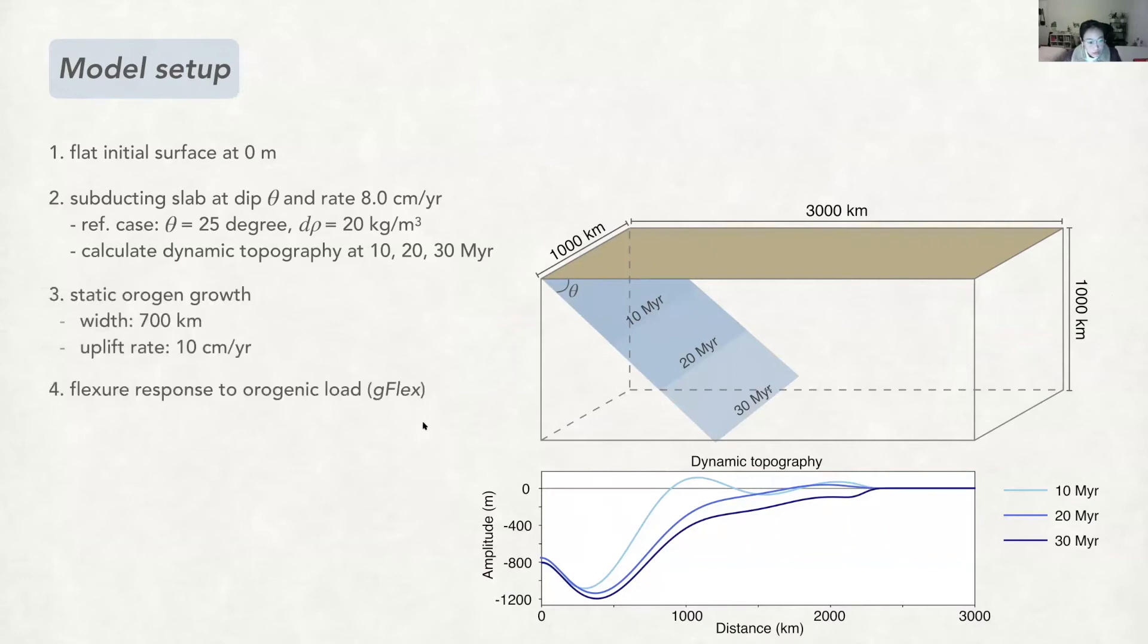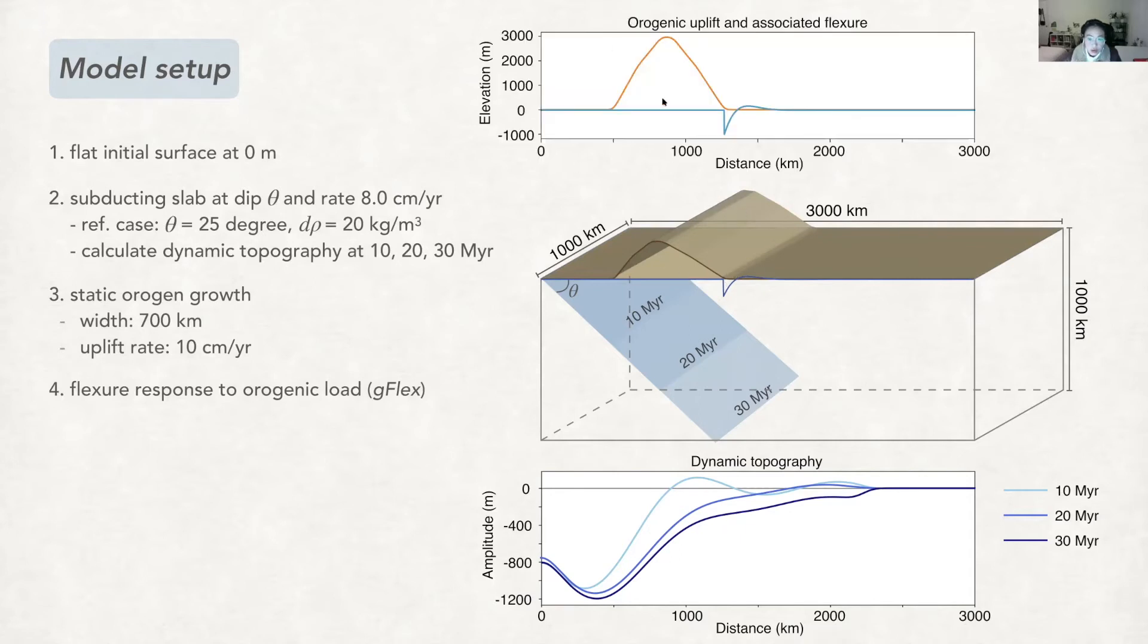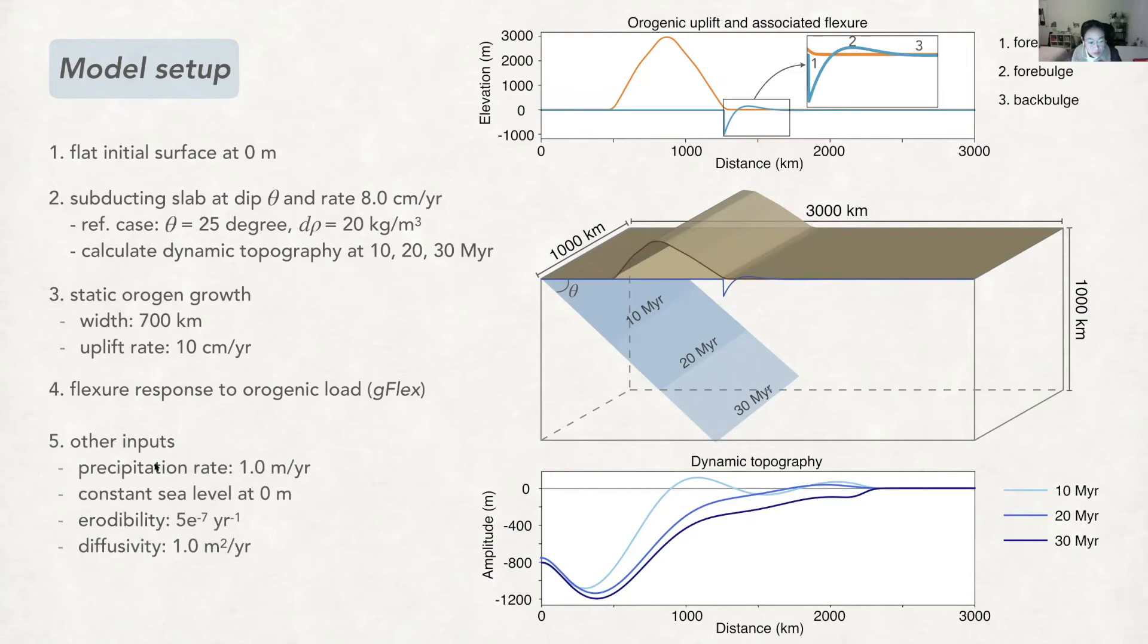We also impose a simple mountain building process related with the plate convergence and also the lithosphere flexure because of this orogenic loading. So on a 2D cross-section it looks like this. Here is the orogenic uplift profile and also here is the flexure profile. And then we also have other input with the rainfall to initiate the incision, and then sediment gets transported by channel flow and hillslope.